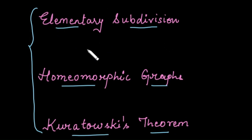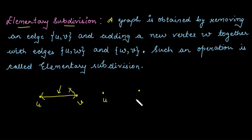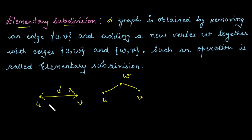Let's begin with the first term: the elementary subdivision. It is an operation that is performed on a graph. Suppose in a graph you have an edge between a vertex U and V. If you remove this edge U to V and add a new vertex W between U and V, this edge is converted into two edges — one between U and W, and the second between W and V. This type of operation is called an elementary subdivision.